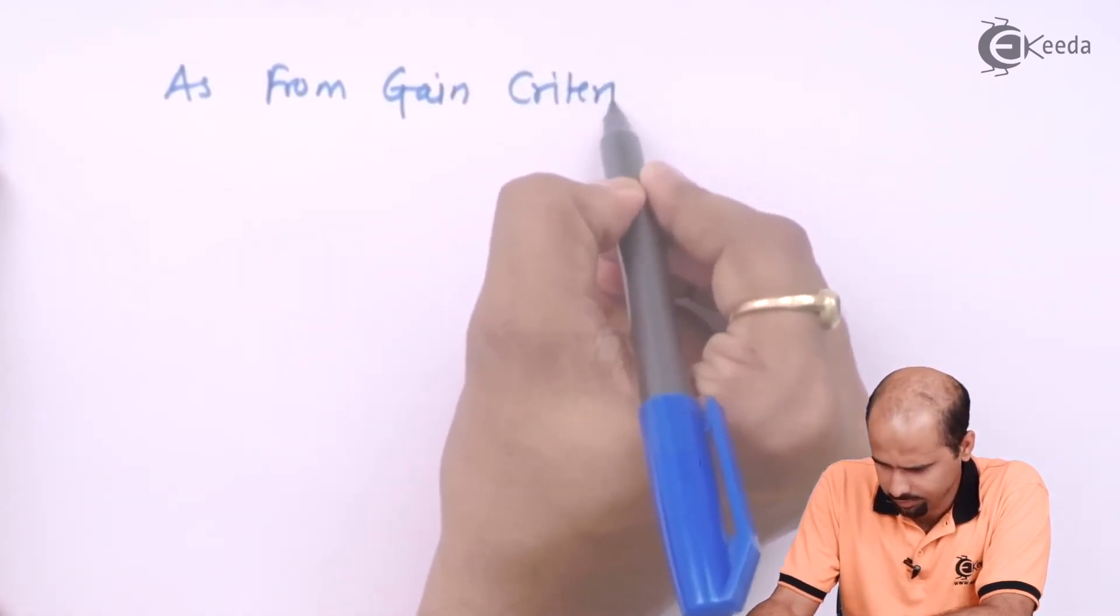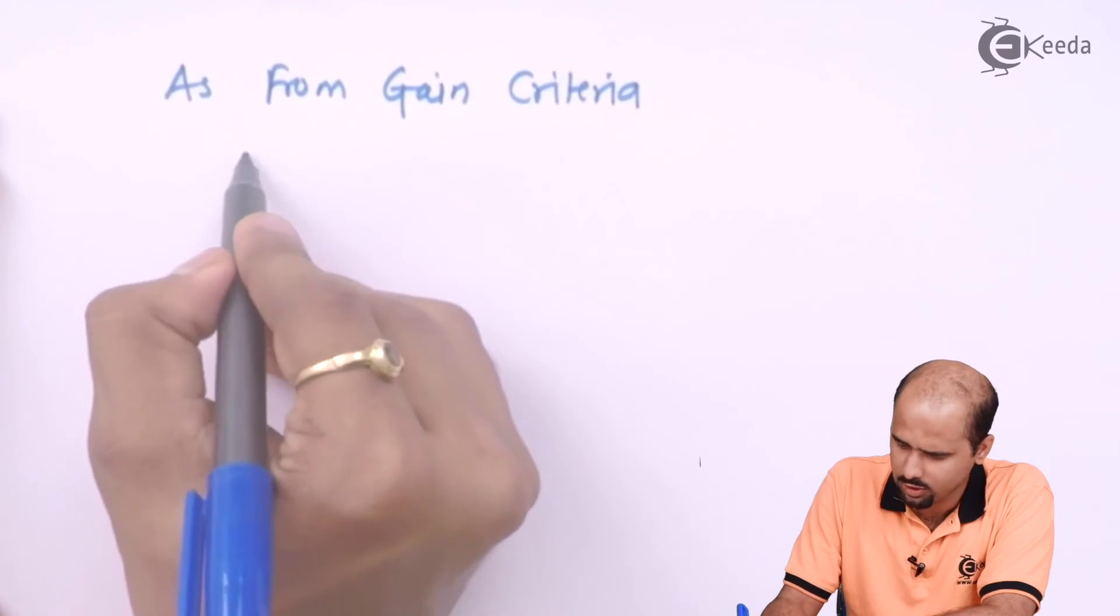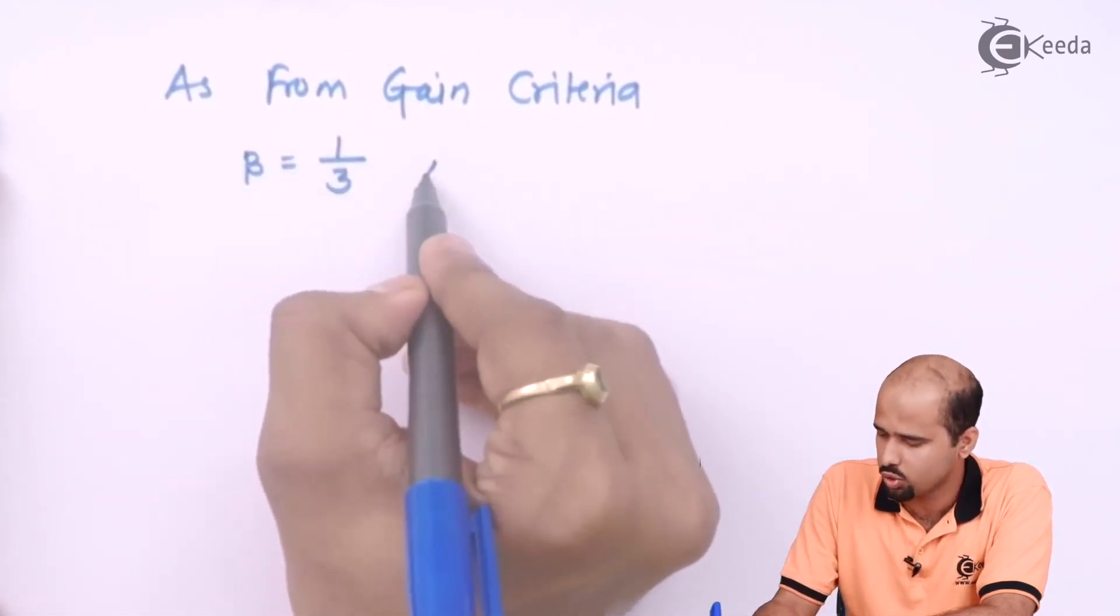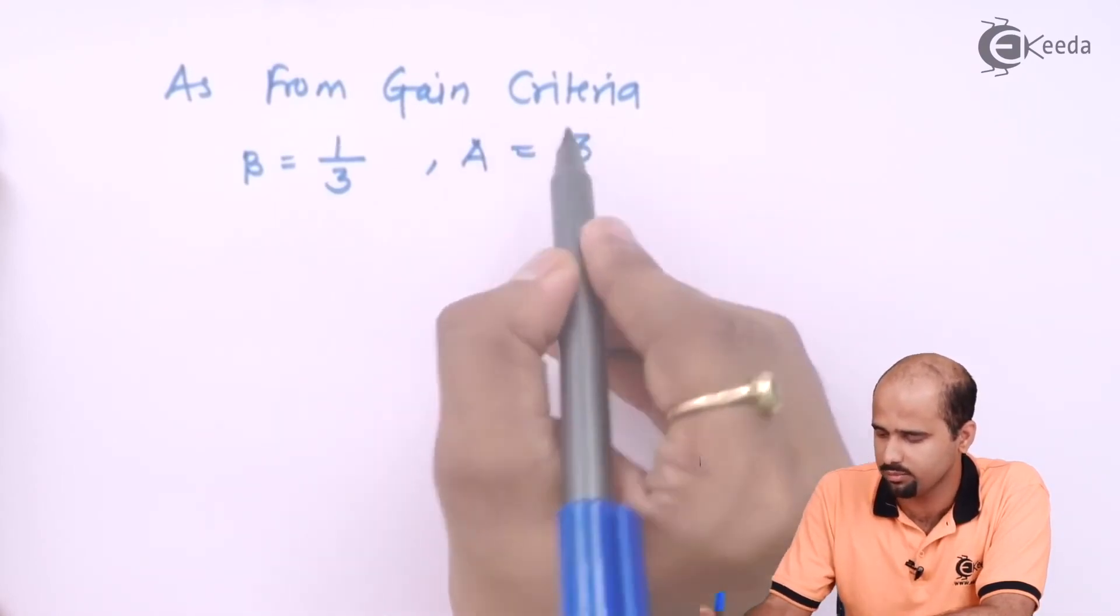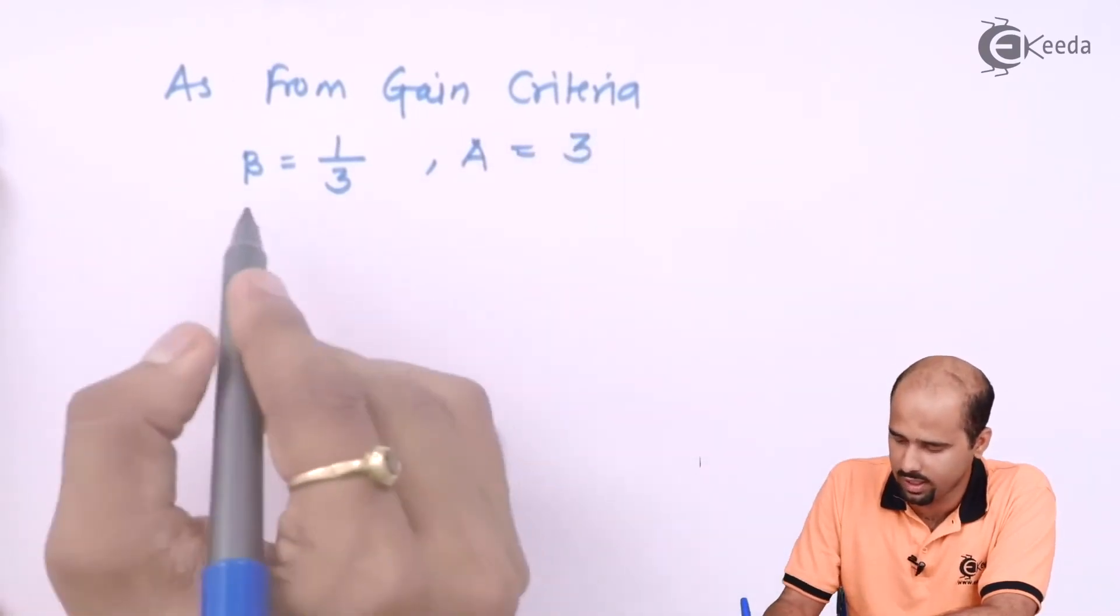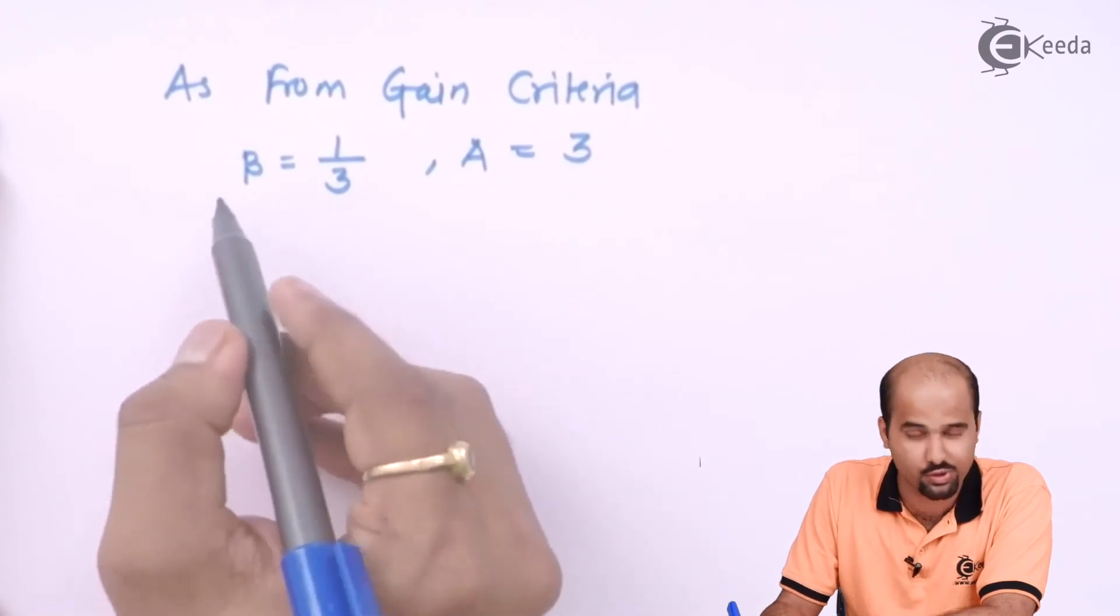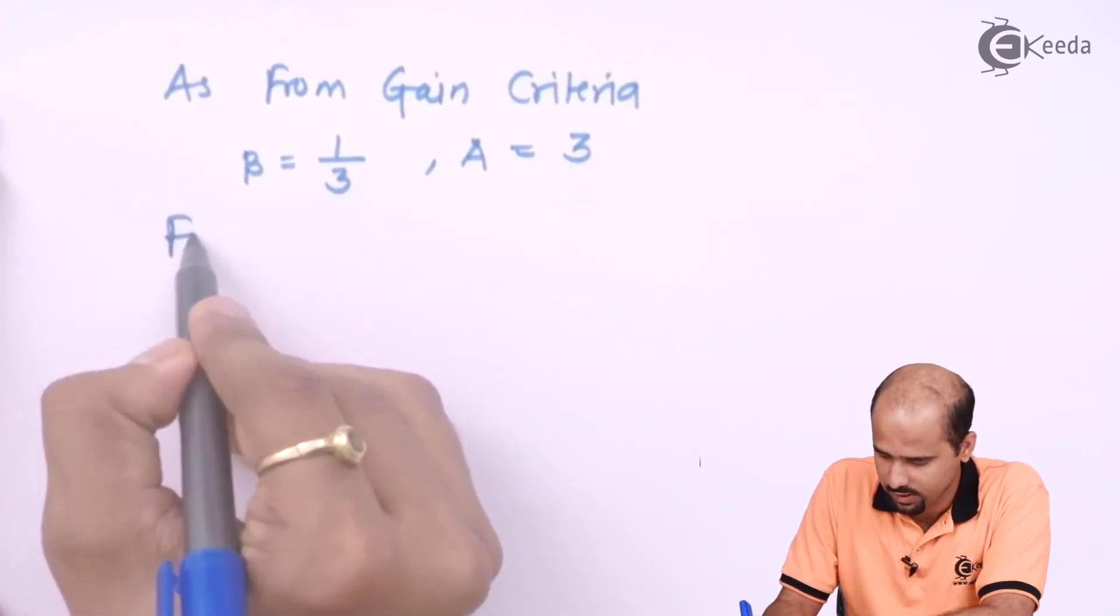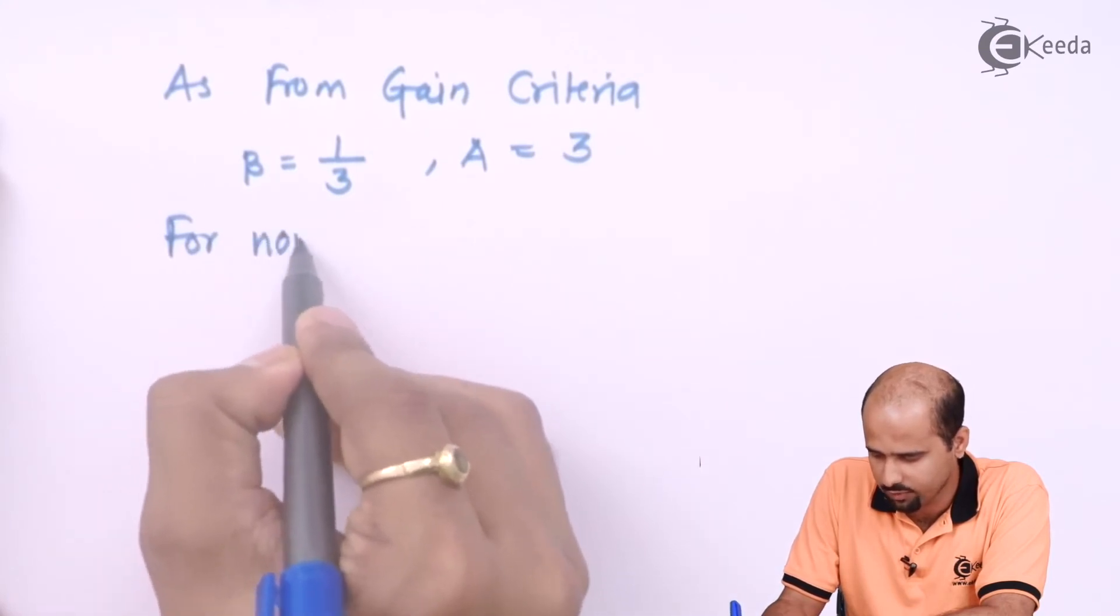As from gain criteria, B = 1/3, so I can say A = 3. If A = 3, I can say that this is the non-inverting amplifier. So we'll say for non-inverting amplifier...